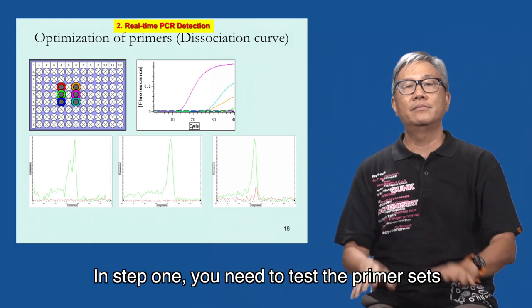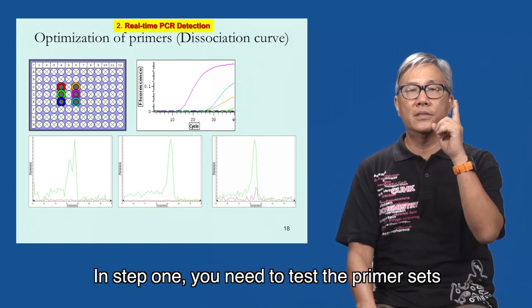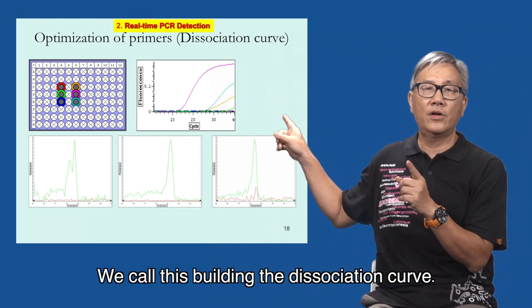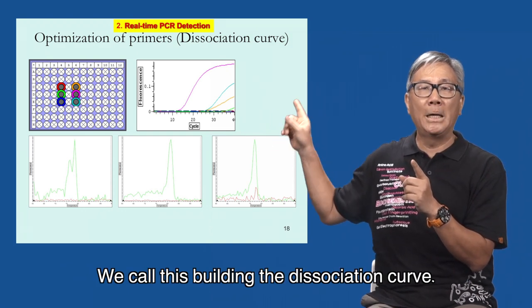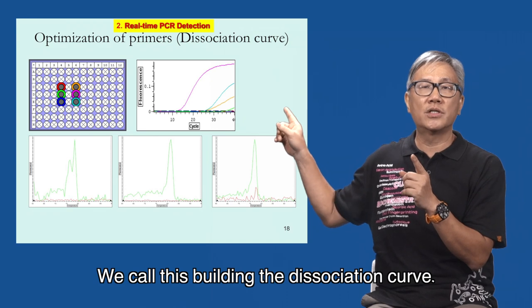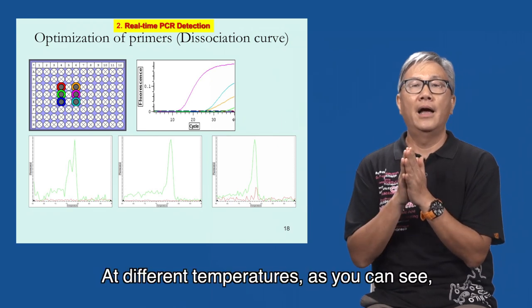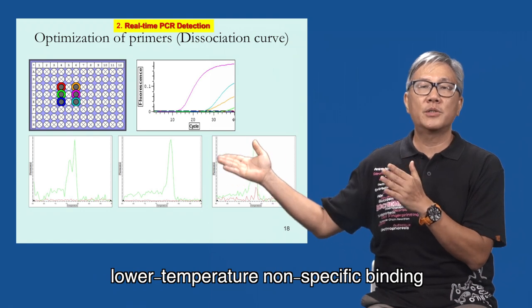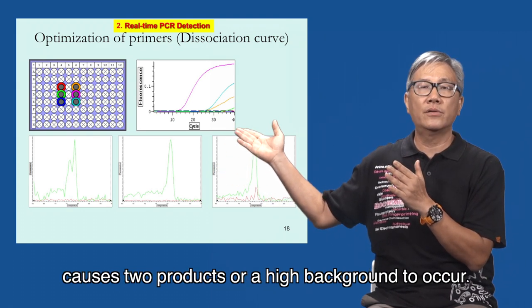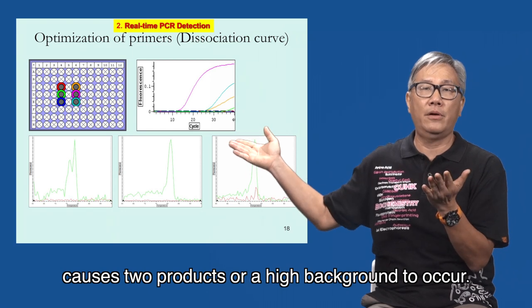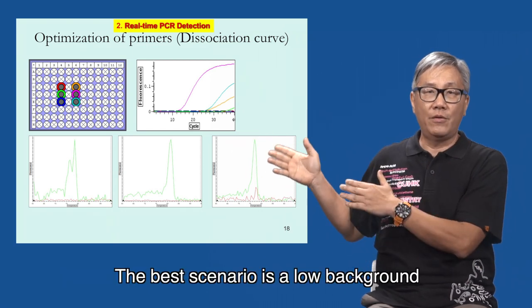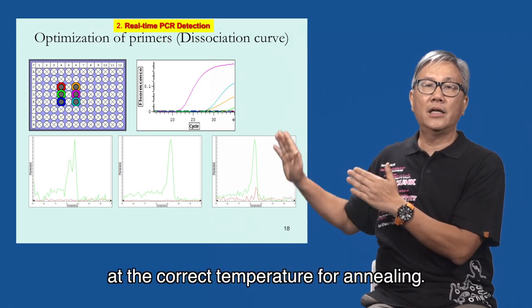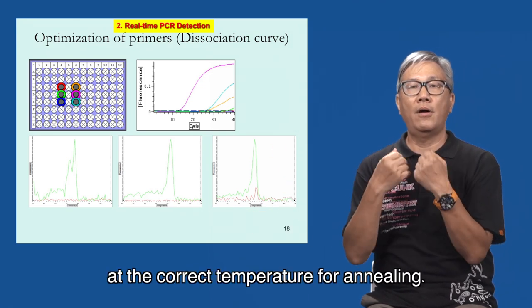In step one, you need to test the primer sets with different annealing temperatures for real-time PCR. We call this building the dissociation curve. At different temperatures, as you can see, lower temperature, non-specific binding causes two products or a high background to occur. The best scenario is a very low background with a sharp peak at the correct temperature for annealing.